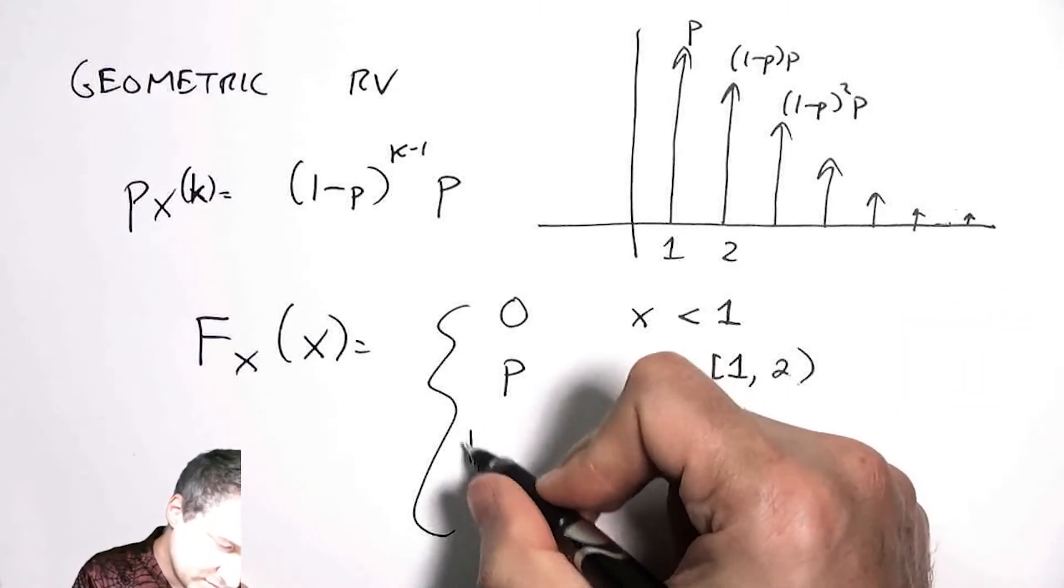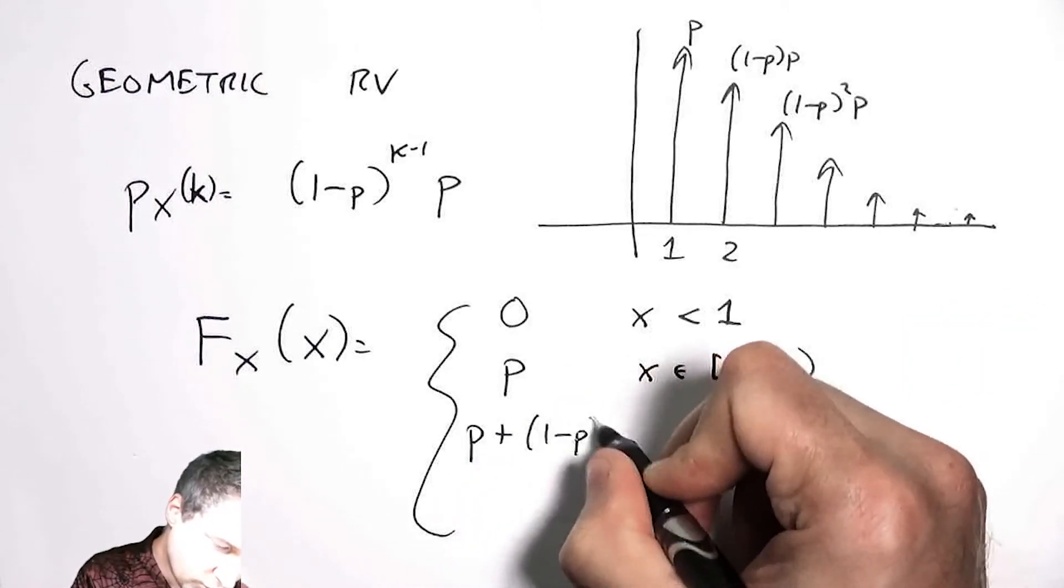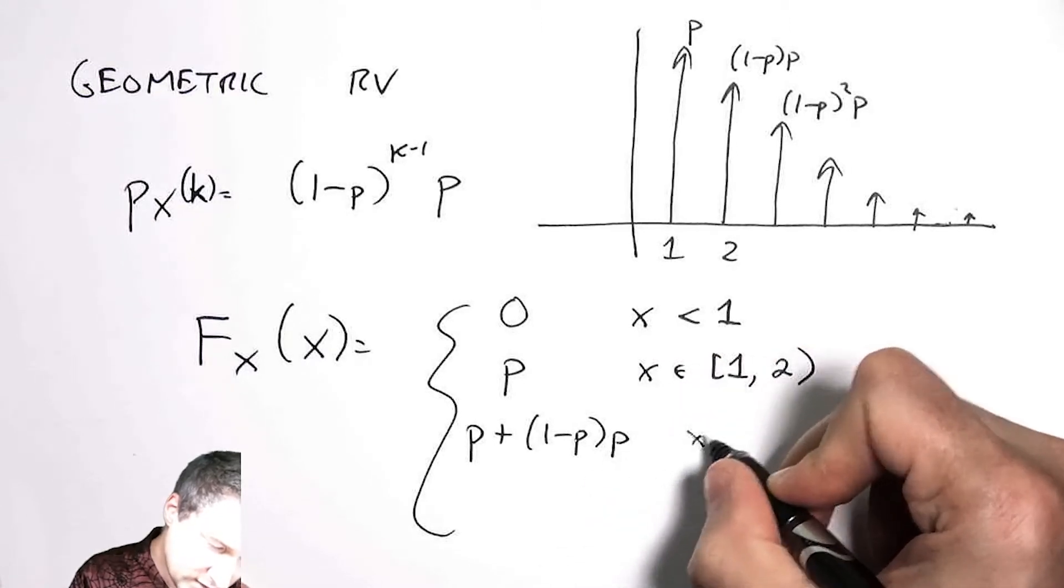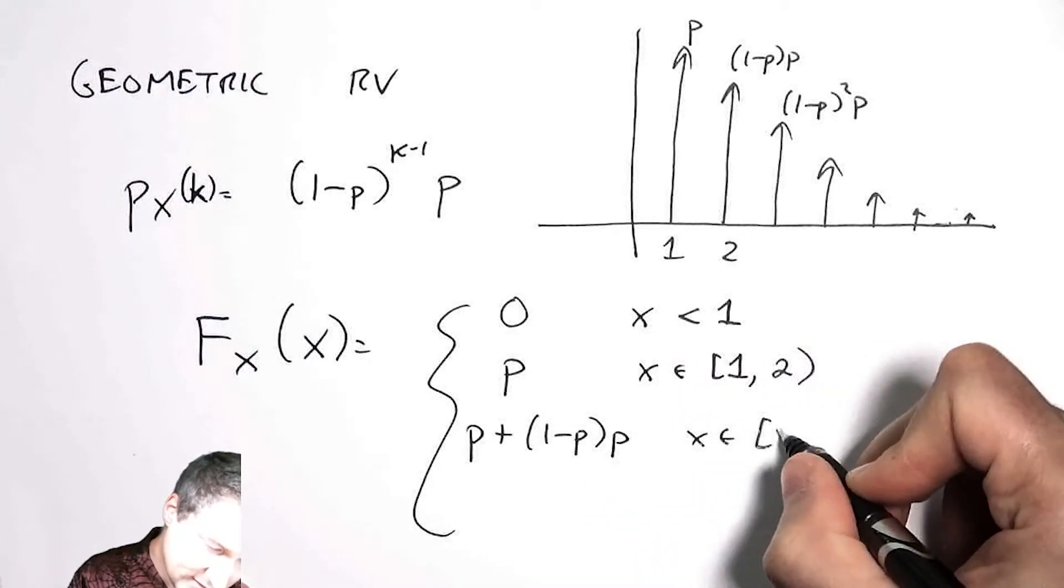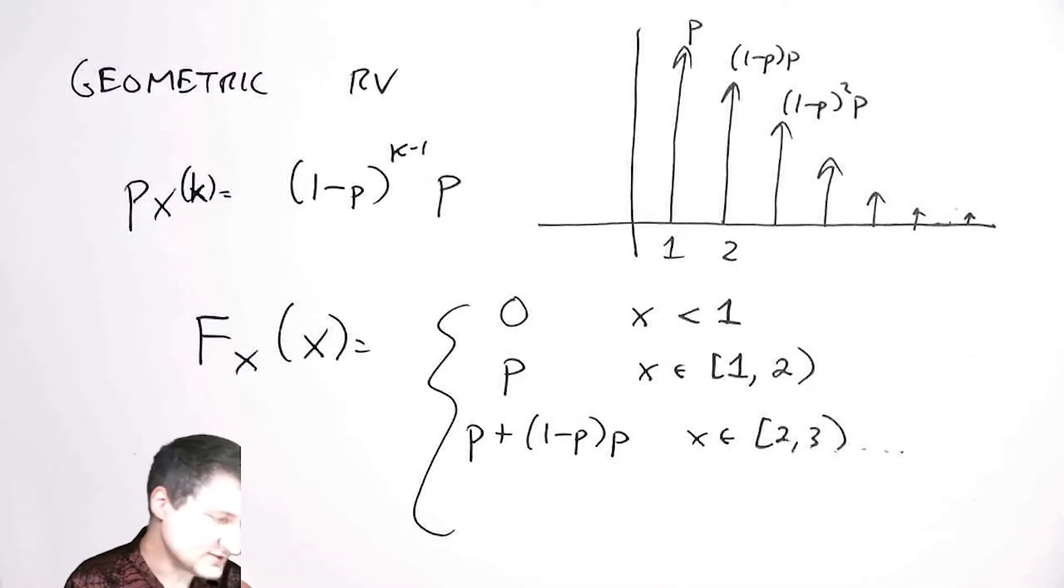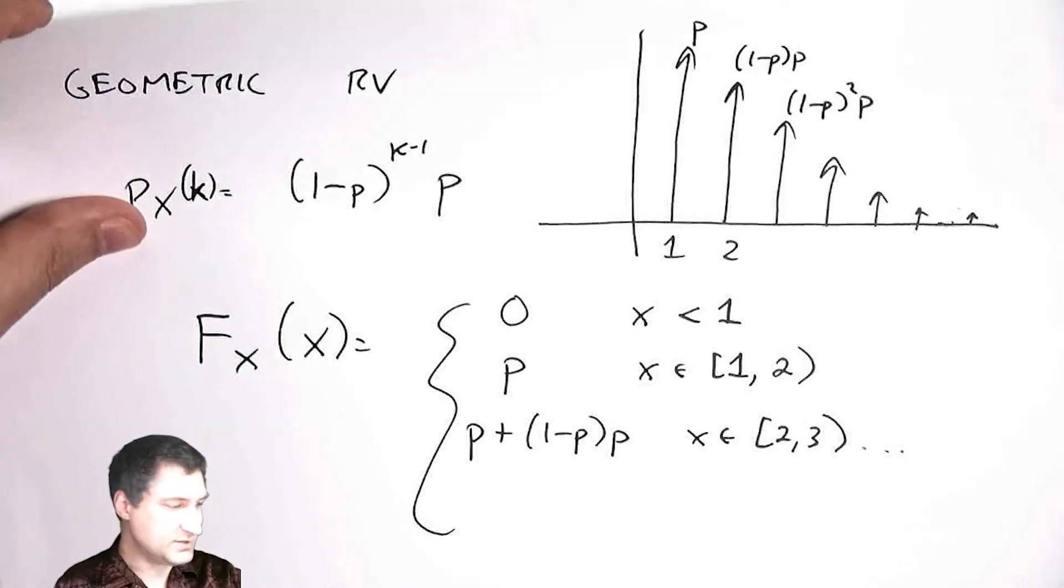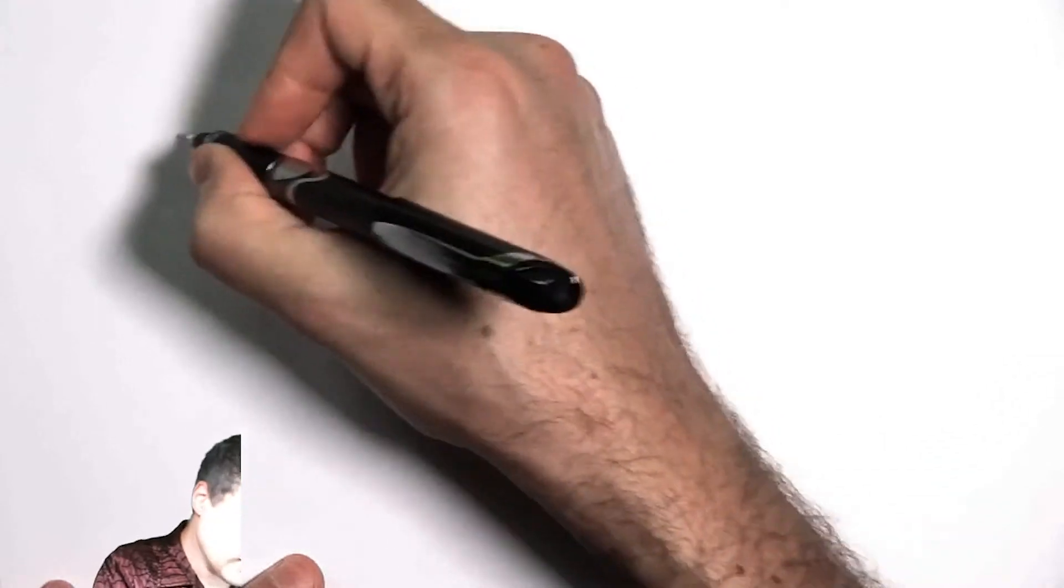And so if I wanted to, I could be mathematical. I could say okay, the CDF for the geometric random variable is going to be the sum of everything that I've seen so far.